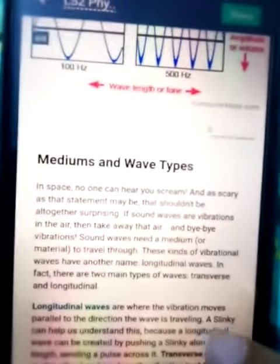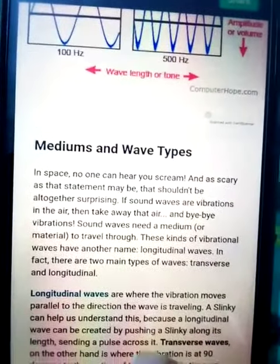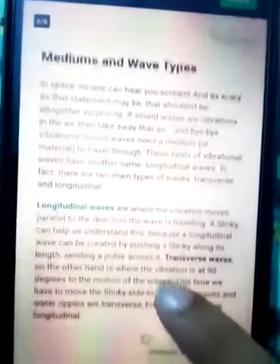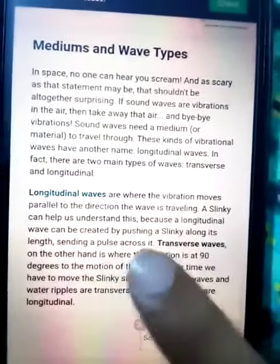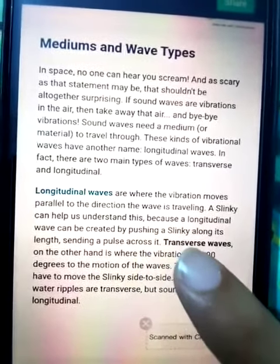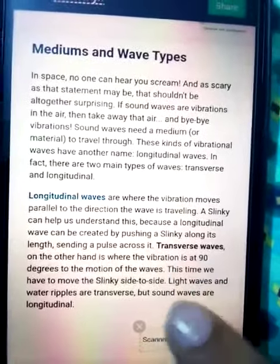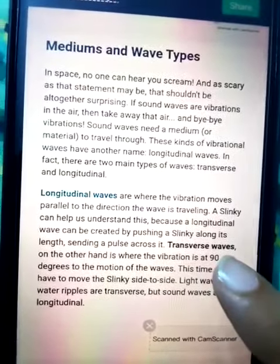Then we discuss about mediums and wave types: longitudinal waves and transverse waves. Longitudinal waves are the waves which are moving parallel to the direction of wave, and transverse waves are the waves which are moving perpendicular, it means they make 90-degree angles to the wave.